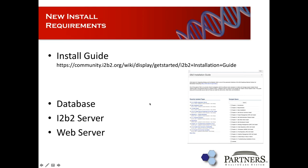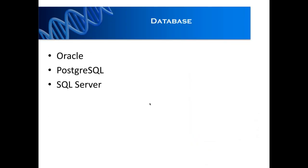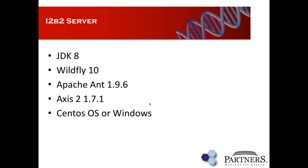For a new install, the install guide covers three main components: the database components, the i2b2 software, and the web server component. For the database, we support Oracle, Postgres, and SQL Server. In the demo I'm just going to use a pre-existing Postgres setup. For the i2b2 software, we previously supported JBoss 7 — the upgrade scripts still support it — but we recommend using WildFly 10, which is the next version. They renamed JBoss to WildFly. WildFly 10 requires JDK 8.